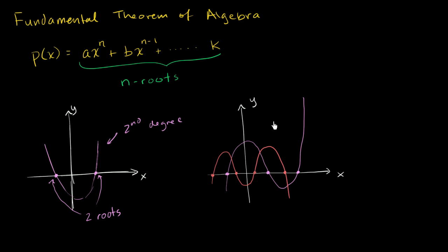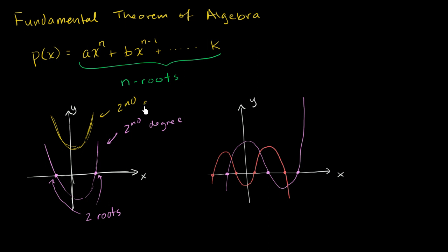But then you might remember things that don't always behave this way. For example, many times we've seen parabolas — second degree polynomials — that look more like this, where they don't seem to intersect the x-axis. So this seems to conflict with the fundamental theorem of algebra.